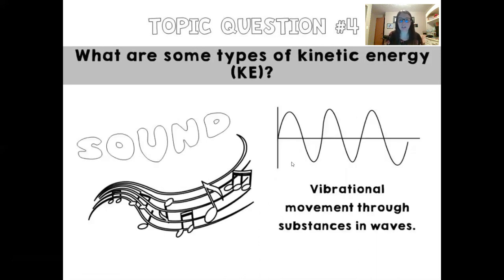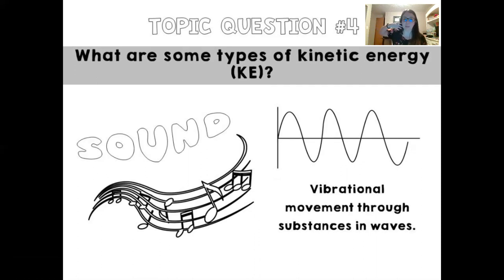Sound energy is classified as kinetic energy because it is the vibration of movement through a substance in waves. The way we make sound with our voices is that our vocal cords vibrate at a certain frequency and move the air particles so another person can sense it with their ear. If you put your fingers on your vocal cords while talking, you can feel the vibrations — that's how sound energy is produced.